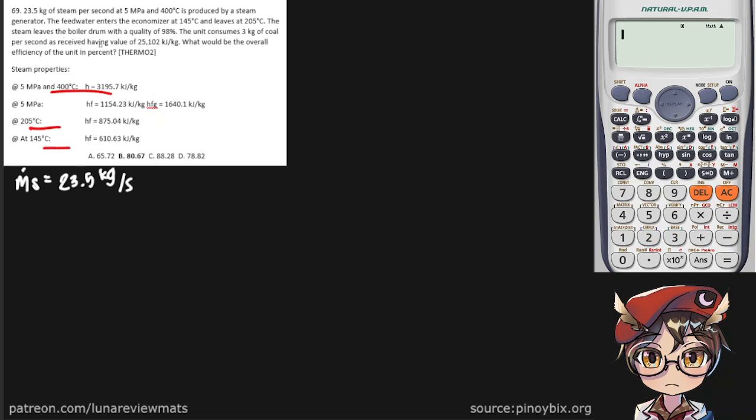Steam leaves the boiler drum with a quality of 98%. Sounds like our x = 0.98. The unit consumes 3 kg of coal per second as received, having a value of 25,102 kJ per kg.